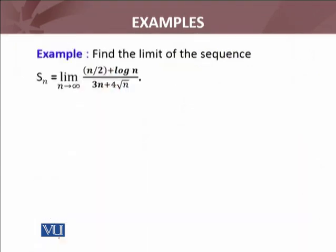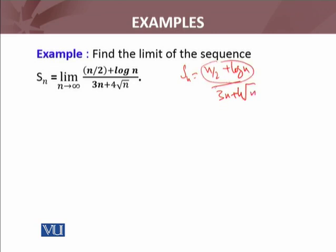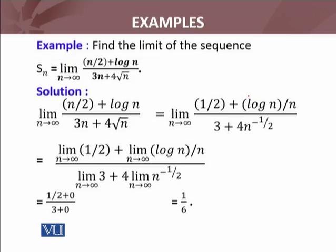Let's discuss another example which is a little more complicated and has a trick. We have the sequence sn whose nth term is (n/2 + log n) divided by (3n + 4√n). I'll deal with the numerator and denominator separately, but before doing that I notice I need to do something first. The technique is: consider the limit as n → ∞ of (n/2 + log n)/(3n + 4√n), and take n common from numerator and denominator.